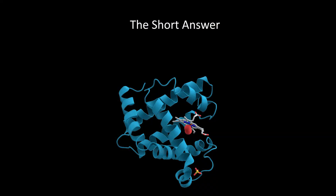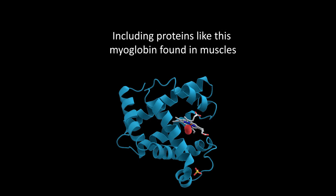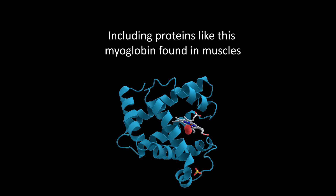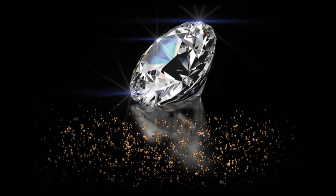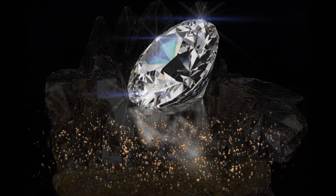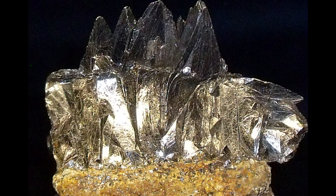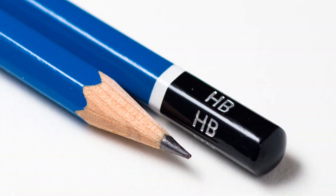Here's the short answer. Carbon can form many types of complex molecules required by life. It is incredibly versatile. Arrange carbon atoms one way and you have diamonds, one of the hardest materials in the world. Rearrange carbon another way and you get graphite, which is both soft and pliable. To understand the unique and versatile properties of carbon, we should get to know this element a little better.